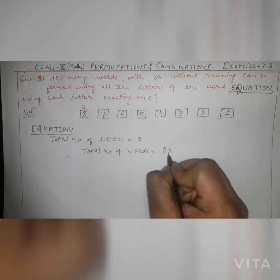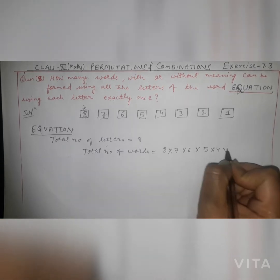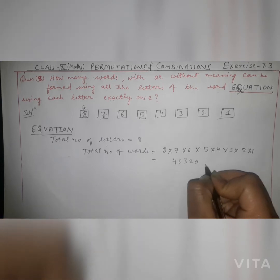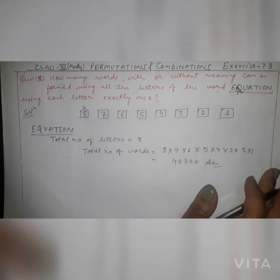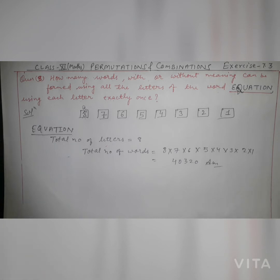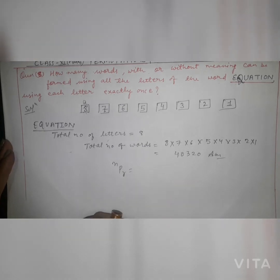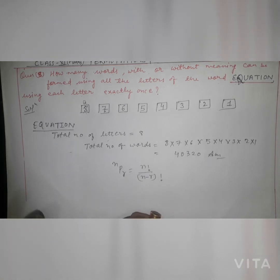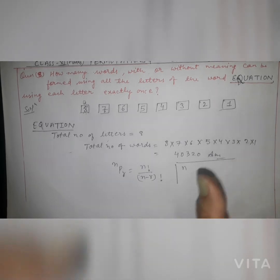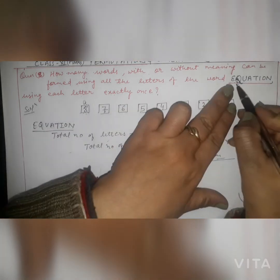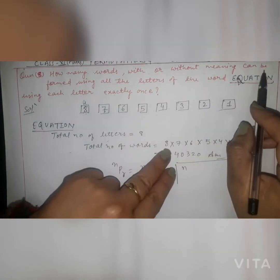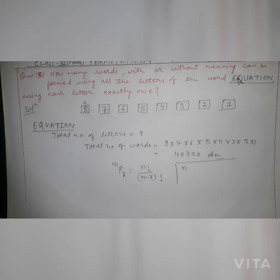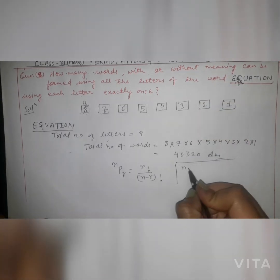To find the total number of words, we multiply all these values together: 8 × 7 × 6 × 5 × 4 × 3 × 2 × 1. The answer is 40320. Now we will solve this using the permutation formula. The formula is nPr = n factorial divided by (n minus r) factorial. Now, what are N and R here?